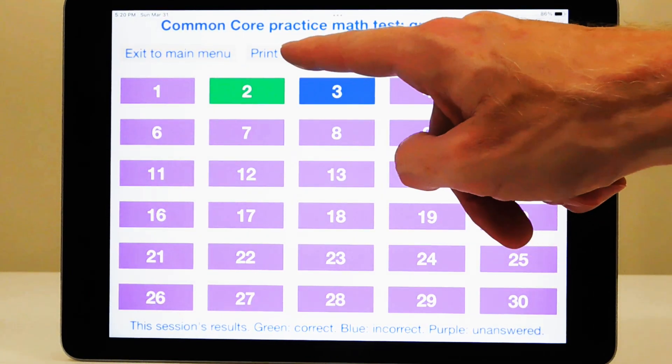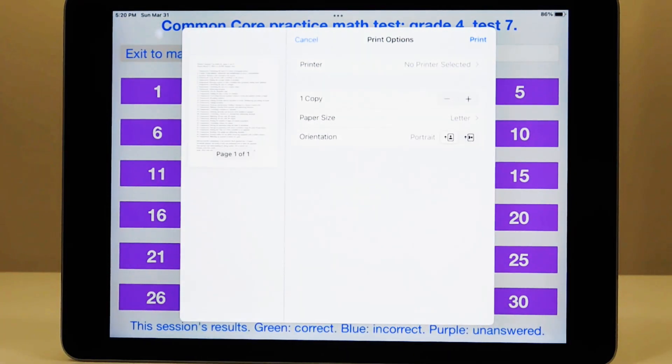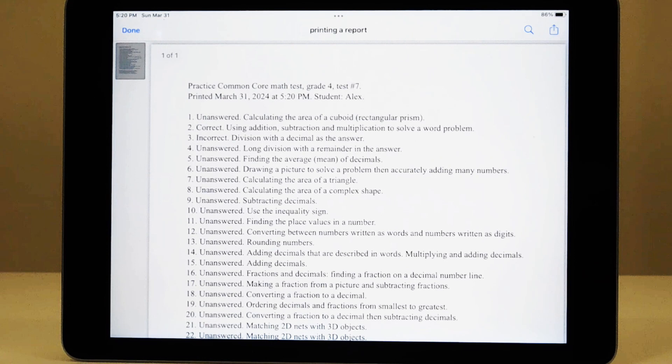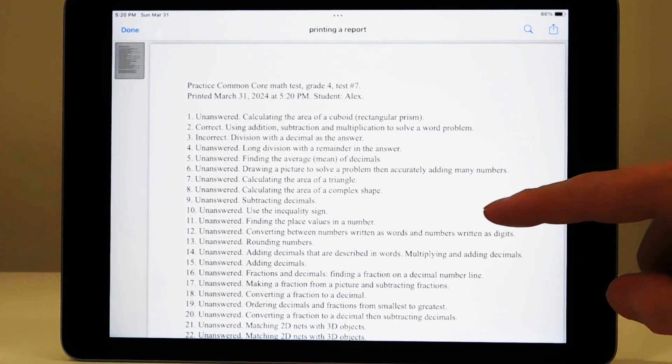Students can enter their names and print a paper report. This may be helpful for making individual lesson plans that show what topics they missed, and for tracking progress in subsequent practice tests.